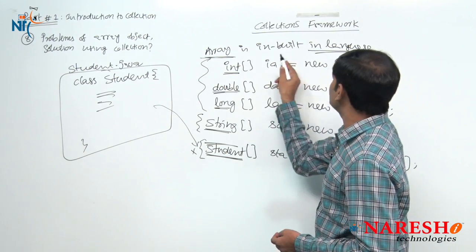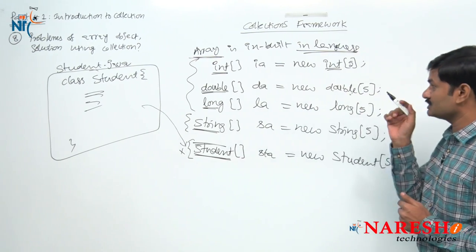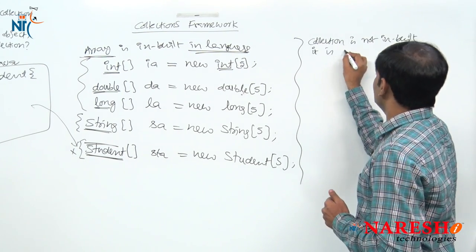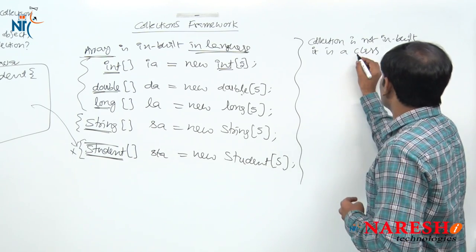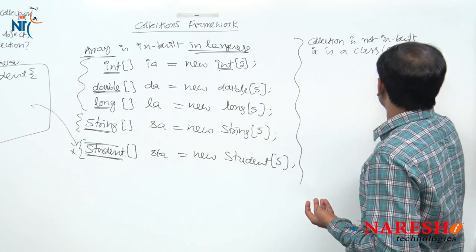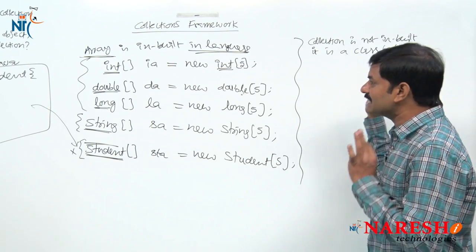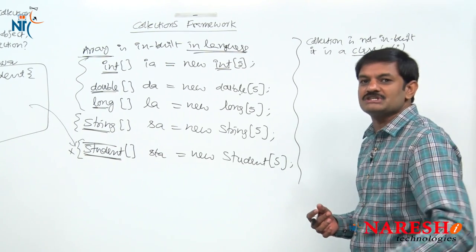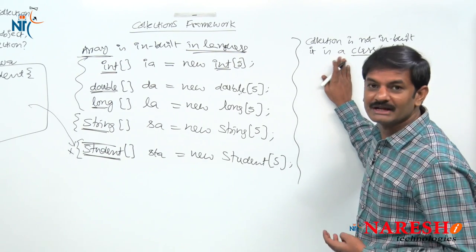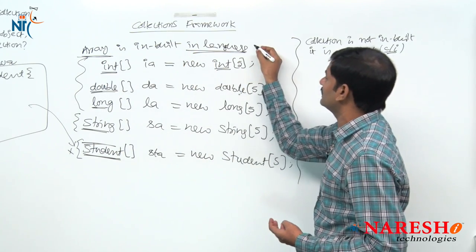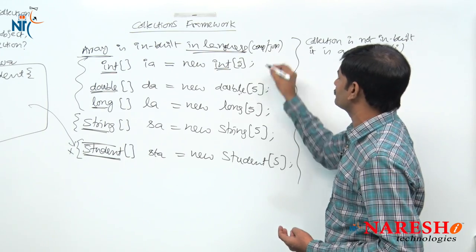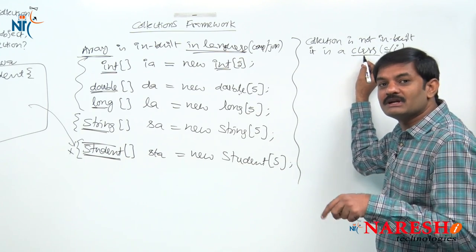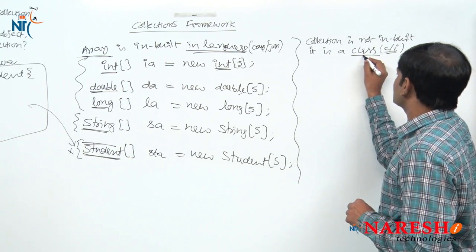So what is the point? Array is inbuilt in the language — you need not define it. But if you come to collection, collection is not inbuilt. It is a class — it may be a class or an interface. Collection is not coming as part of compiler software and JVM software. Array is coming inbuilt as part of compiler software and JVM. You need not do any additional work to define data types int, double, long. But collection is a class — meaning API.